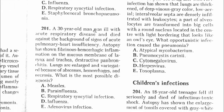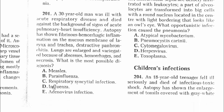Question 201: A 30-year-old man ill with acute respiratory disease died. Autopsy showed fibrinoid hemorrhagic inflammation on the mucous membrane of the larynx and trachea, extractive pan-bronchitis; lungs are enlarged and variegated because of abscesses, hemorrhages, and necrosis. The most possible diagnosis is influenza. The answer is D.